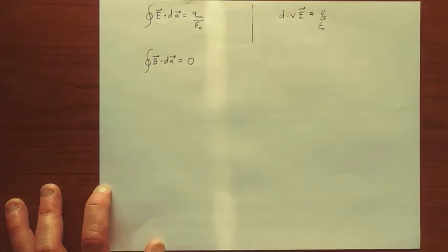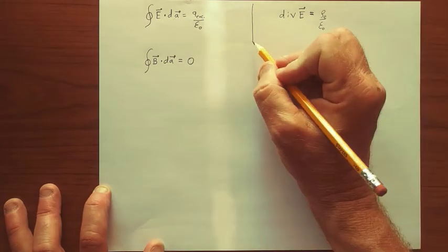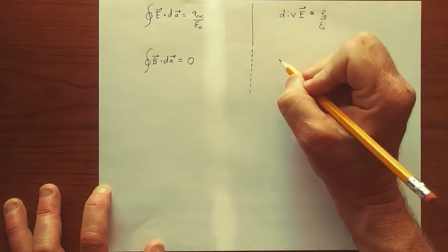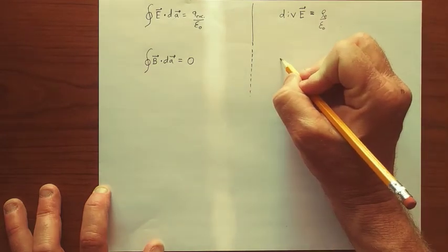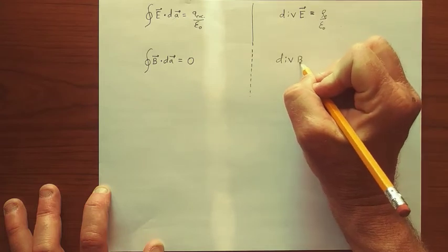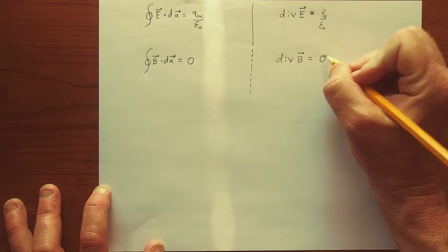The integral of the magnetic field over a closed surface is always zero. And the same theorem allows us to get at the differential version, which is divergence of the magnetic field is equal to zero. It doesn't matter what the source is doing.